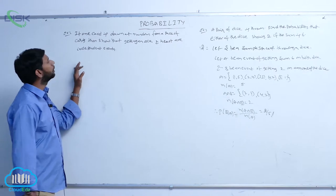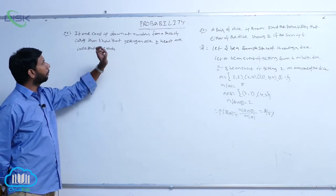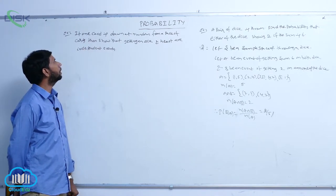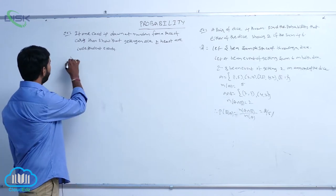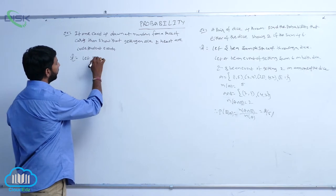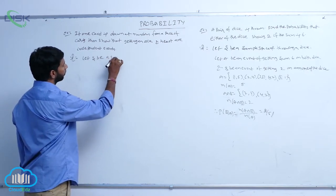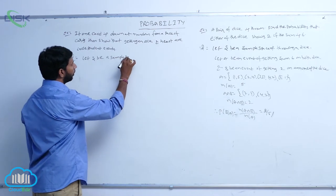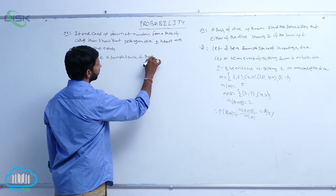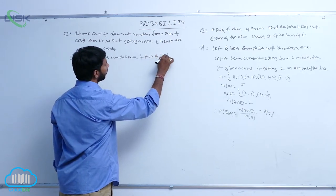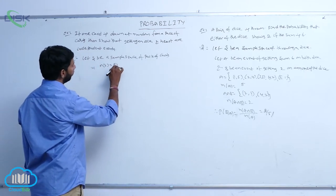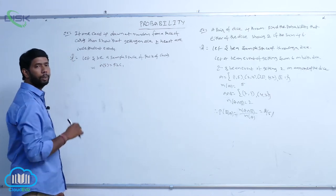Next example: if one card is drawn at random from a pack of cards, then show that getting an ace card and getting a heart are independent events. Let S be the sample space of a pack of cards, so N(S) = 52C1.